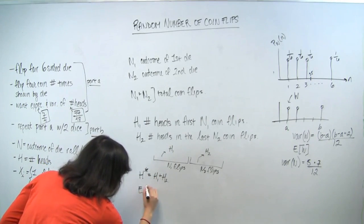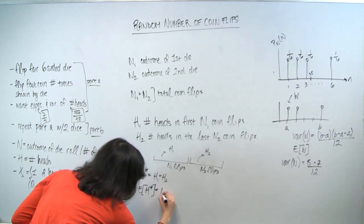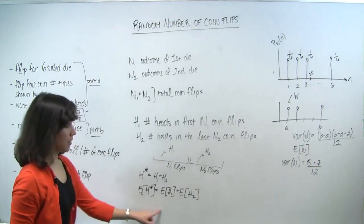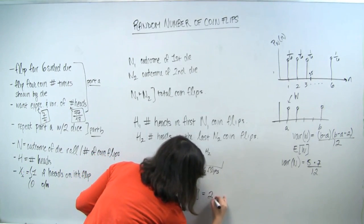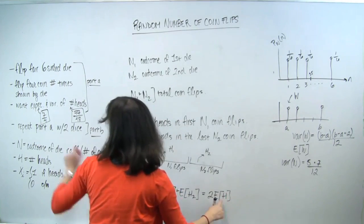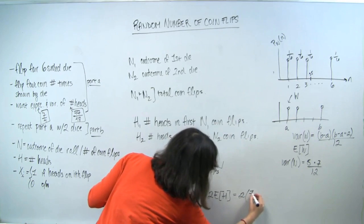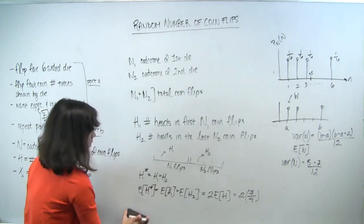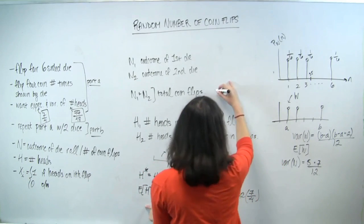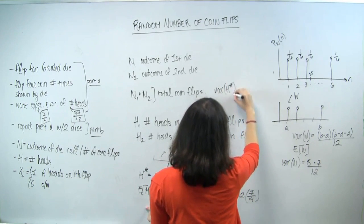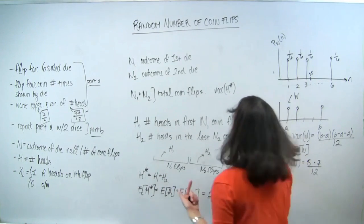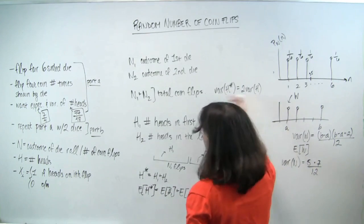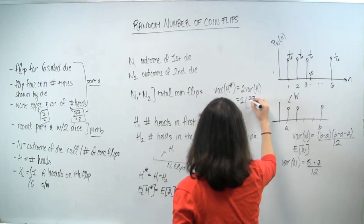So E[h*] = E[h_1] + E[h_2] by linearity of expectation, and since they're statistically equivalent this is 2 times E[h] = 2 times 7/4. For the variance, independence gives Var(h*) = Var(h_1) + Var(h_2) = 2 times Var(h) = 2 times 77/48.